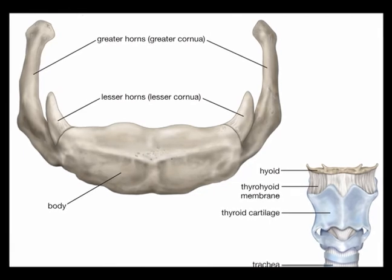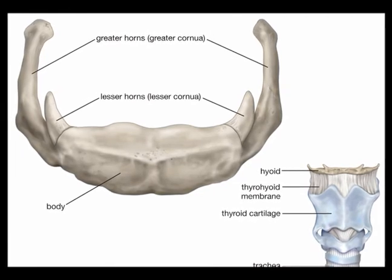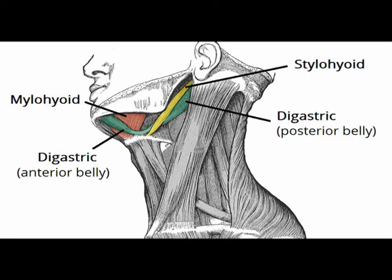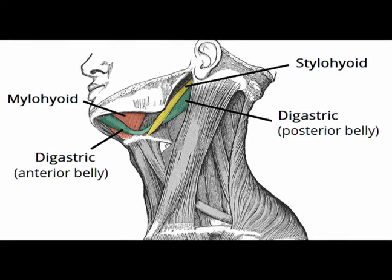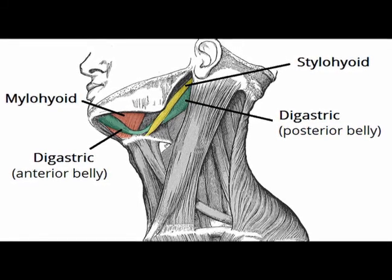Its anatomical position is just superior to the thyroid cartilage. It functions as an anchor for the suprahyoid muscles and the infrahyoid muscles. Thank you.